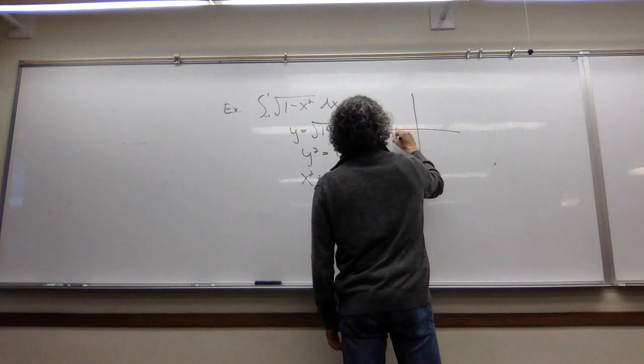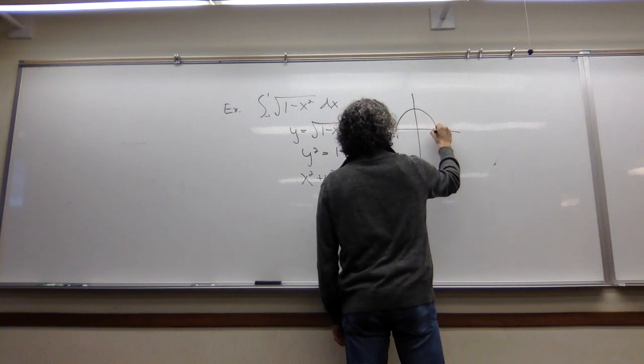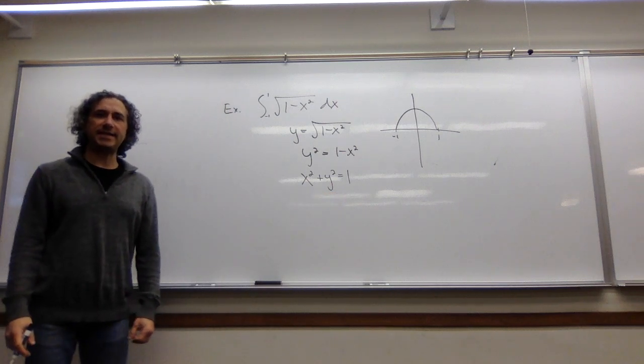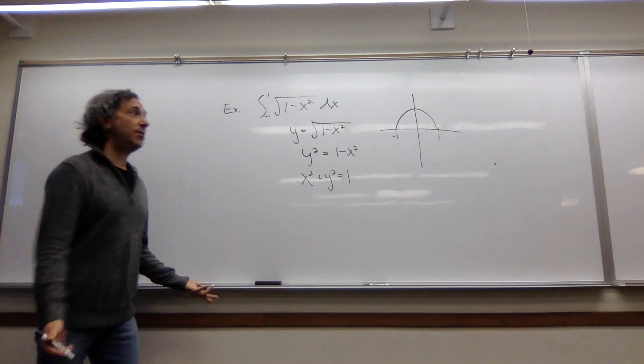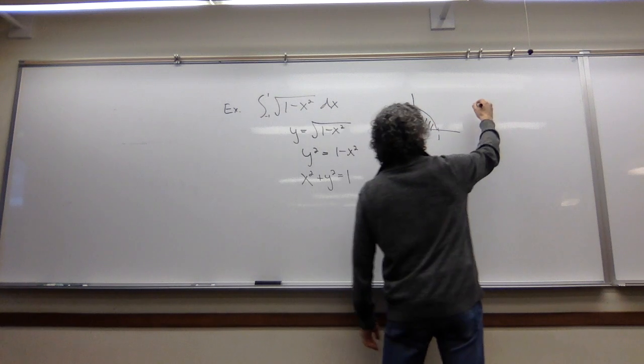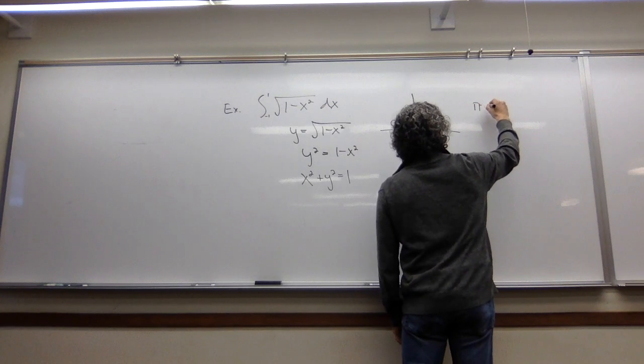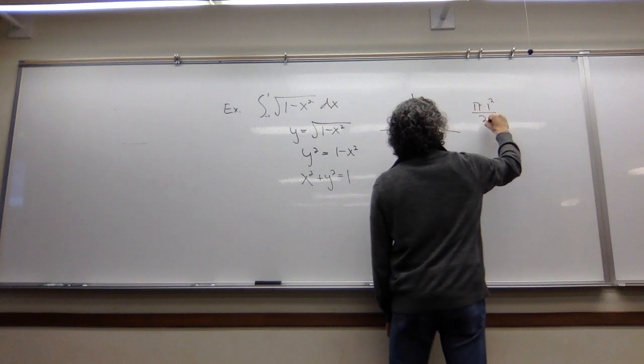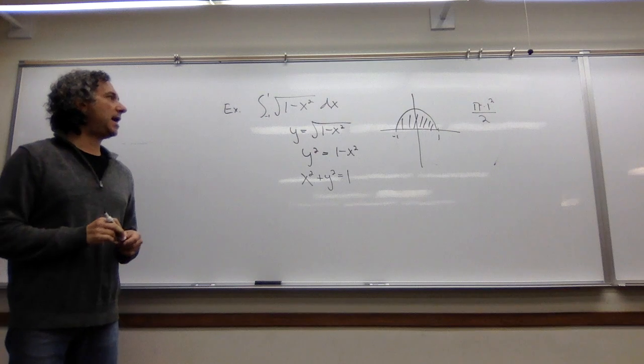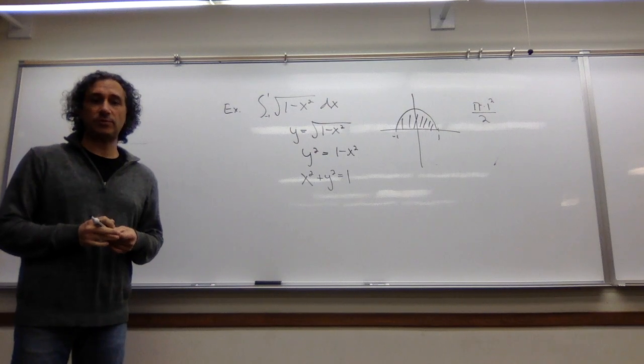I'm going from minus 1 to 1. This guy is a circle with radius 1 centered at the origin. So I just need to know that the formula for the area of a circle is pi r squared. Since I just have half a circle, it'll be pi r squared divided by 2, or pi times 1 squared over 2.